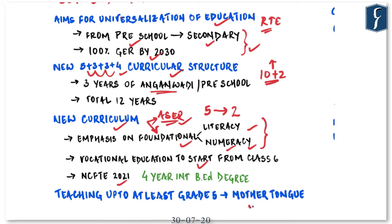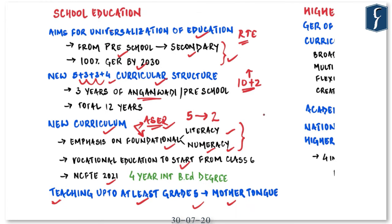One of the highlighting features of this policy dealing with school education is its emphasis on the language of instruction. Mother tongue will be made compulsory as the instruction method for teaching up to at least Grade 5. The NEP clearly highlights that no language will be imposed on any student. These steps will not only enable better learning outcomes for children but will also go a long way in assuaging the doubts of regional political parties.